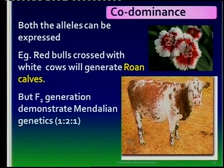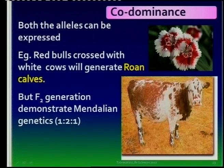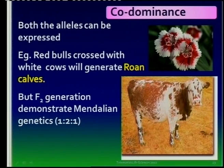Co-dominance is something different. With co-dominance, both alleles are equally dominant and both are expressed in the phenotype. You get a carnation showing both red and white colours - not a blend like pink, but both colours present. The same applies to cattle: a red bull crossed with a white cow produces roan calves, which show both red and white in the phenotype.